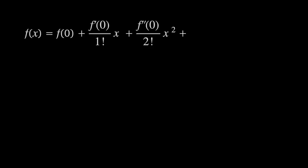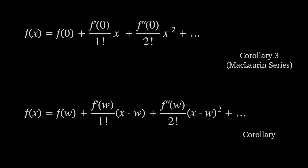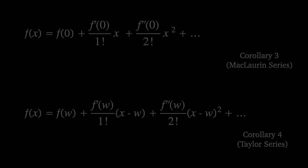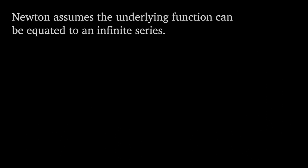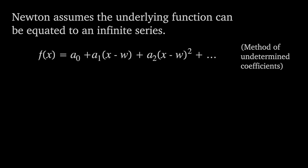In modern notation, Corollary 3 describes the Maclaurin series, and Corollary 4 describes the Taylor series about W. The method Newton uses to arrive at these results is to assume the underlying function can be equated to an infinite series, then uses repeated differentiation to calculate the coefficients. This is often nowadays called the method of undetermined coefficients.